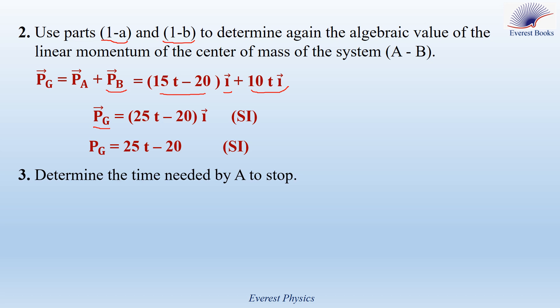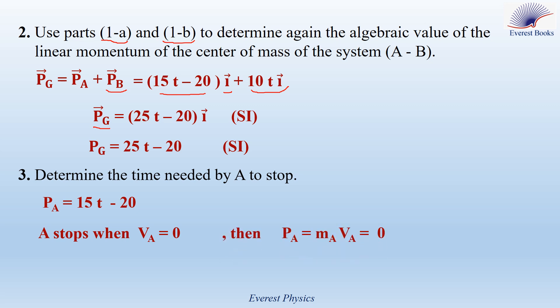Question 3: Determine the time needed by A to stop. The linear momentum of A is 15t minus 20. When A stops, its speed becomes zero, so its linear momentum also becomes zero. Setting 15t minus 20 equals 0, we find t equals 1.33 seconds.